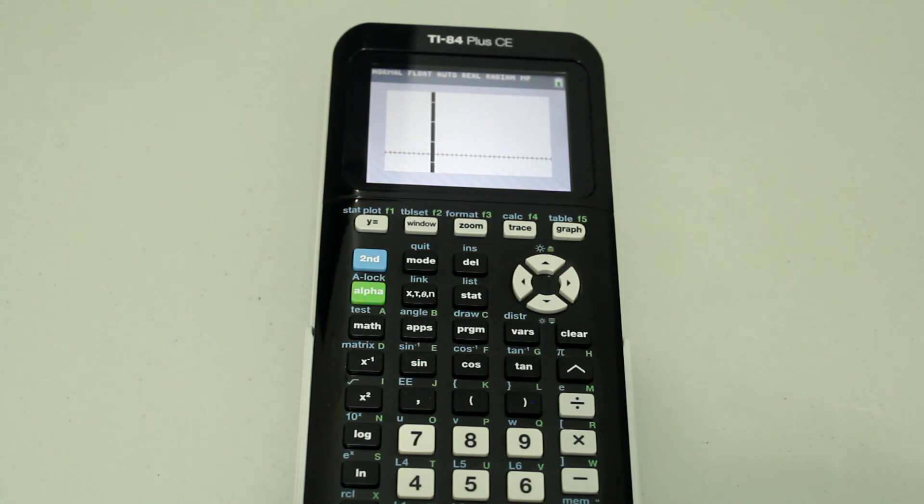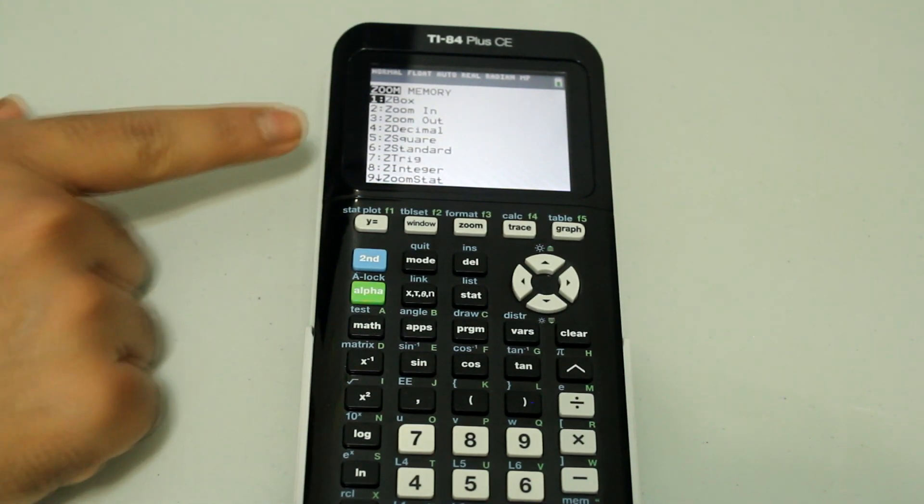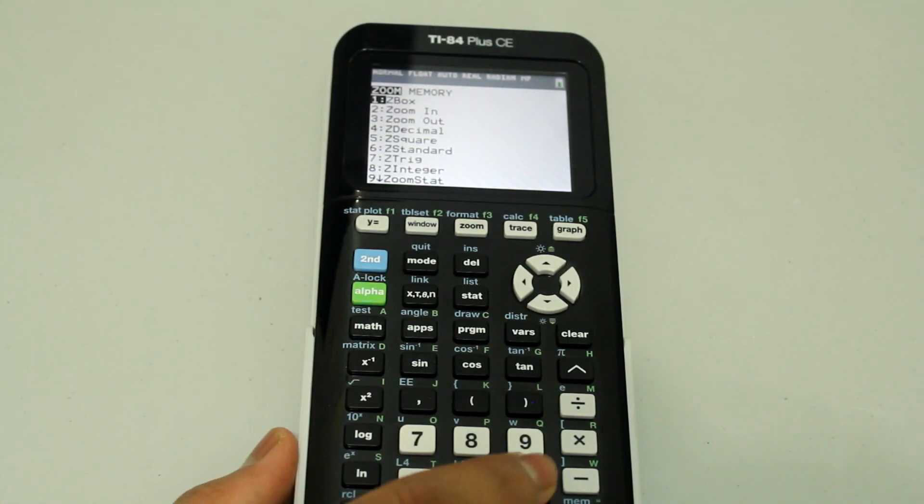You don't want to go back and reset the window manually. So all you have to do to get your standard window back is hit the zoom button, and then choose the standard using the number 6 button.